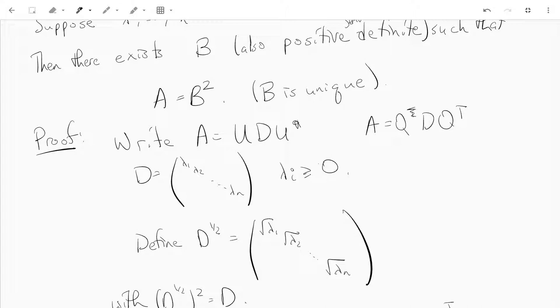All the eigenvalues are greater than or equal to zero, and we just define D^(1/2) to be the matrix with the square root of the eigenvalues on the diagonal.